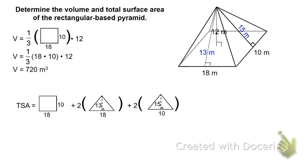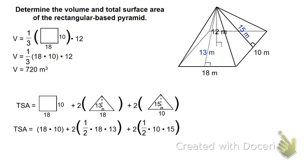Hopefully you set up the picture equation something like this. We have the base rectangle, two triangles with a base of 18 and height of 13, and two triangles with a base of 10 and height of 15. The area of the rectangle is 18 times 10. Two times half cancels, leaving 18 times 13, which is 234. The last set: two times half cancels, leaving 10 times 15, which is 150. Adding these together: 180 plus 234 plus 150, we get 564 meters squared for the total surface area.